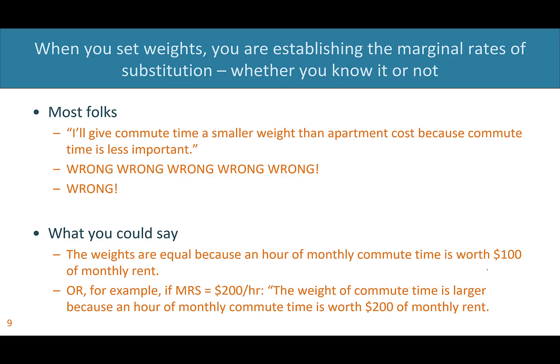If you plug through the same process with $200 per hour as the marginal rate, the weight of commute time would actually be larger than the weight of rent — because an hour of monthly commute time is worth $200 of monthly rent. Saying that attributes are more or less important is not meaningful.